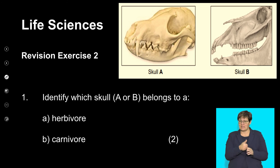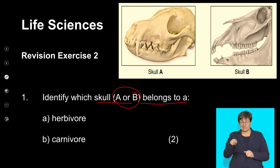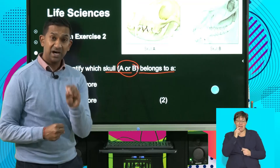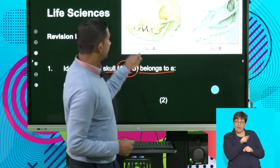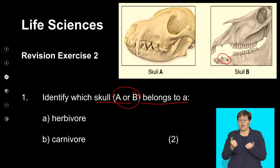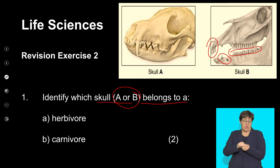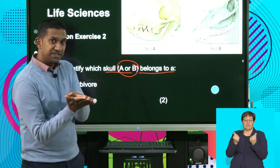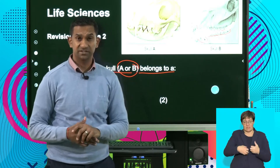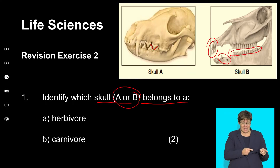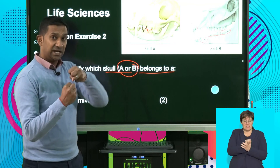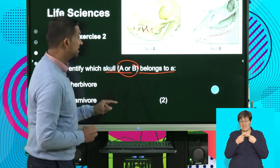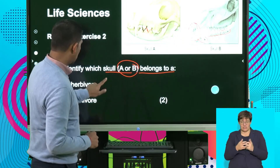Question: identify which skull belongs to a herbivore. As I mentioned, herbivores lack canines and have large incisors. Skull B lacks canines, has well-developed incisors, and flattened molars and premolars. The molars and premolars are flattened so that when they chew, they can grind plant material and release nutrients, allowing for an easier digestion process. Comparing to the carnivore teeth, skull A has sharp triangular teeth adapted for crushing and biting to reduce the size of meat being consumed. Skull B is clearly the herbivore.